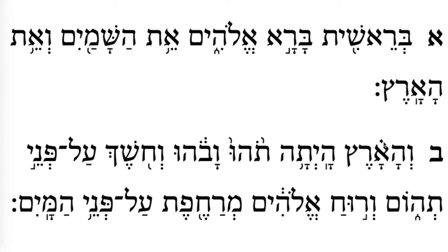Let's read the Hebrew first: Ve-ha-aretz, 'and the earth.' Ha-yet-ah, 'was.' Tohu, 'formless.' Va-vohu, 'and void' — va is 'and,' vohu is 'void.' Ve-choshech, 'and darkness' — ve is 'and,' choshech is 'darkness.' Al-penei, 'on the face of' or 'over.' Tehom, 'the deep.' Ve-ruach, 'and the spirit' or 'the wind.' Elohim, 'of God.' Merachefet, 'hovered.' Al-penei, 'on the face of' or 'over.' Ha-mayim, 'the water' or 'the waters.'